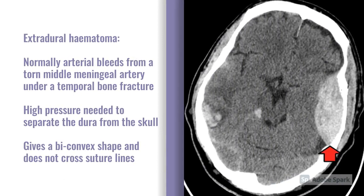The first example is of an extradural hematoma — extradural meaning between the dura mater and the skull itself. These are normally arterial bleeds, often related to a temporal bone fracture where you can rupture the middle meningeal artery. Radiologically, this gives you a biconvex shape, sometimes referred to as lentiform. One of the key differentiators with an extradural hematoma is that it does not cross the suture lines, which is because of the anatomy of the dura previously explained.